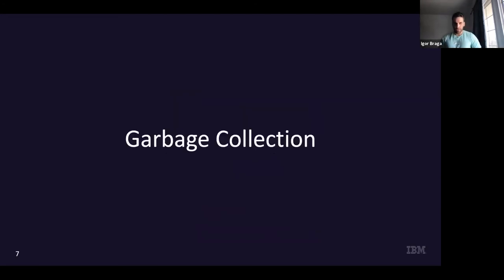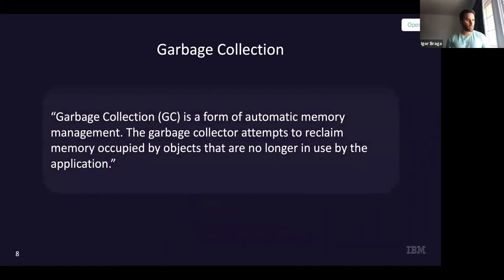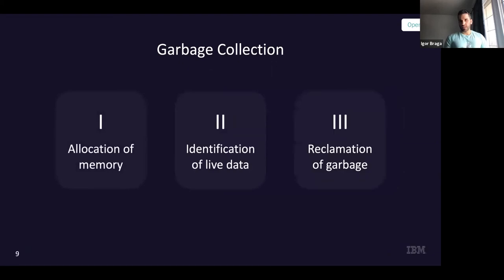Garbage collection — this is a by-the-book definition. Garbage collection is a form of automatic memory management. The garbage collector reclaims memory occupied by objects that are no longer being used by the application. That's opposed to languages like C and C++, where you as a developer have to manually allocate and deallocate memory. All data that's not reachable is considered dead and reclaimed by the garbage collector.